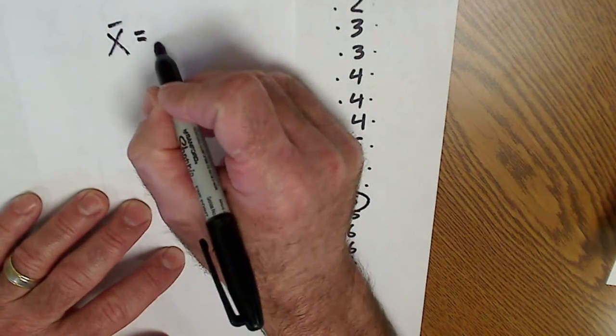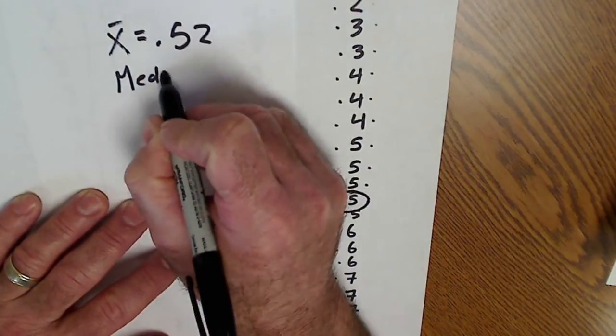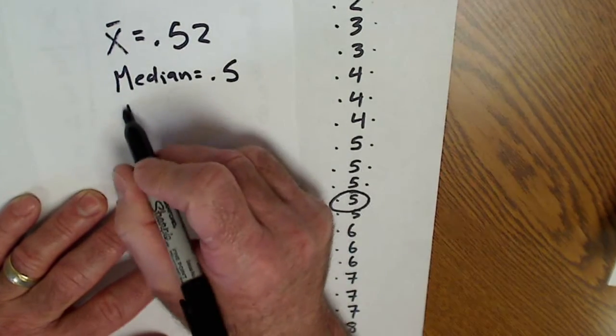So we have an average, X bar is average, 0.52, a median is the one that's in the middle. Our median is 0.5, and our third stat is called mode.